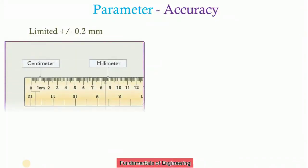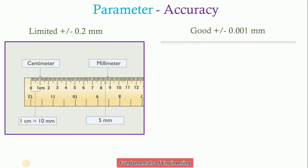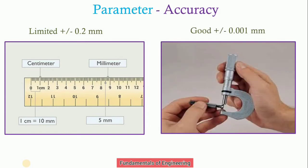Accuracy. If you consider the accuracy, line standard is limited up to plus or minus 0.2 mm, and end standard is giving good accuracy up to plus or minus 0.001 mm. So based on the accuracy, end standard is good as compared to line standard.